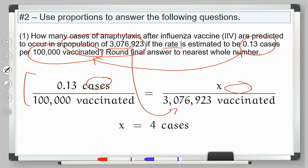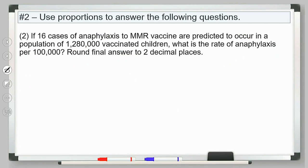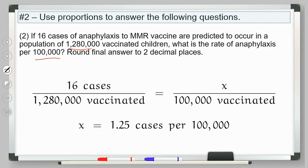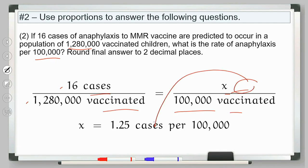The rest of question two just reverses that. Here it wants to know: if there are 16 cases per this amount, what is the rate per 100,000? We know a rate of 16 per 1.28 million — set that equal to some unknown per 100,000. That is what a proportion is: setting two ratios equal to each other. To make sure you don't mess up the multiplying and dividing, watch your units. X then is going to be cases — that's what we're solving for.